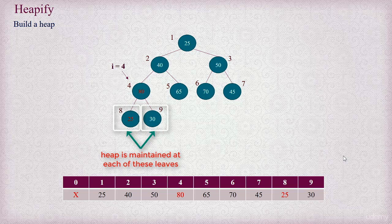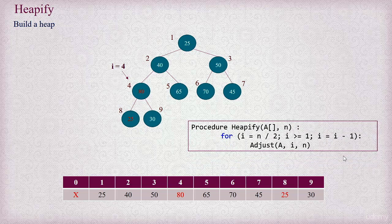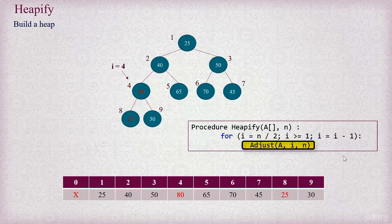Now we have a max heap maintained at index 4. The heapify operation starts adjusting nodes so that each of them is a heap, starting from index n divided by 2 down to index 1. Heapify executes a loop starting from i equals n by 2 and goes up to 1. On each iteration, it reduces i by 1 and calls the adjust operation for index i. So for i equals 4, it adjusted the heap at index 4.